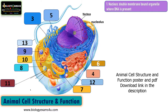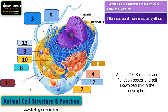The second structure is the nucleolus. There is a dark region within the nucleus which is called the nucleolus. This region is RNA-rich and it is a site of ribosome subunit synthesis. Ribosomes are involved in protein synthesis.